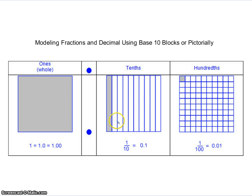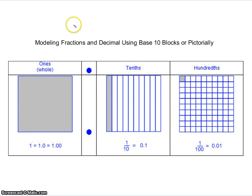If I shade in one long, that's one tenth. If I shade in three of them, that would be three tenths. If I break my whole even further down into hundredths — the little unit squares — then each square is worth one hundredth. So if I shade in thirty of those, that would be thirty hundredths. It's using a base ten representation to model a decimal or a fraction.